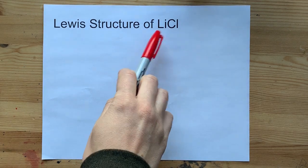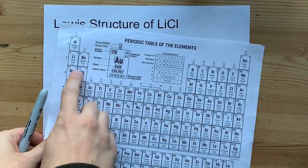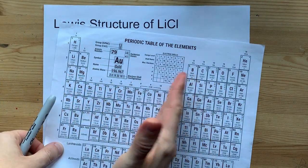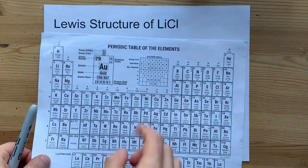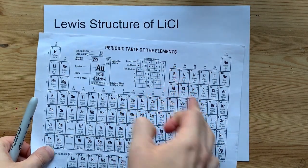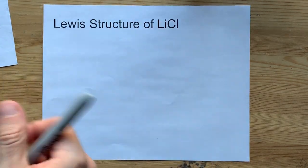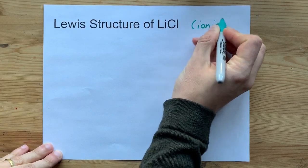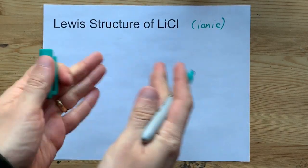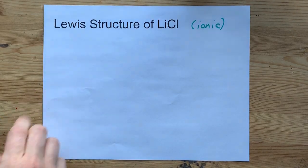Lewis structure of lithium chloride — that's LiCl. The first thing to note is that lithium is a metal because it comes from the left side of the staircase on the periodic table. Chlorine is a non-metal because it comes from the right side of the staircase. A metal and a non-metal will combine to make an ionic compound, so these two will not share electrons. There will be a transfer of electrons from one to the other.